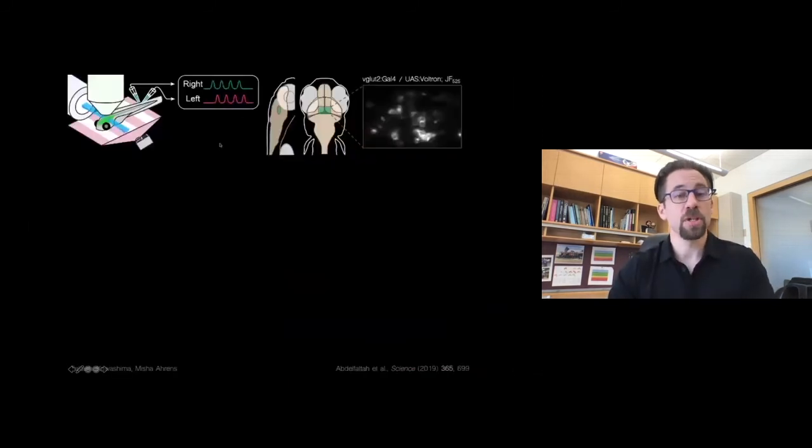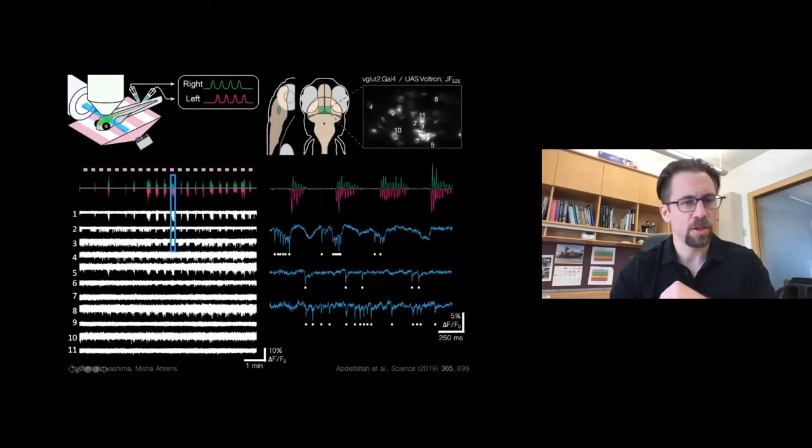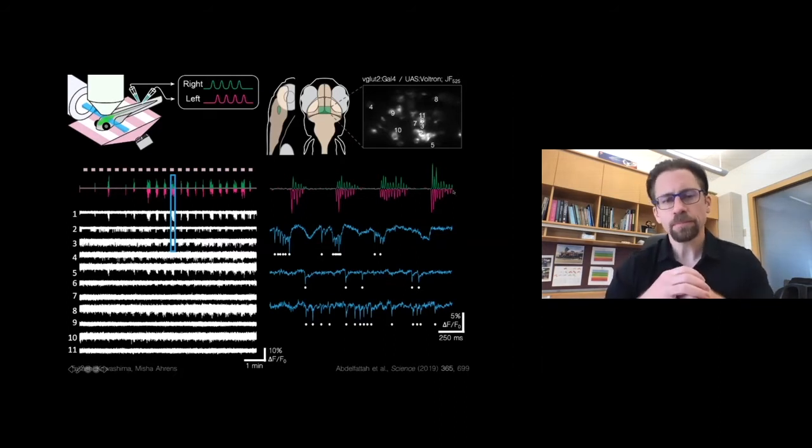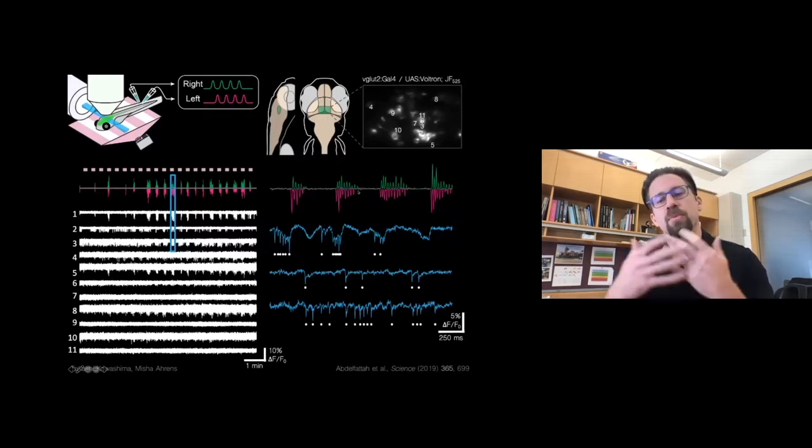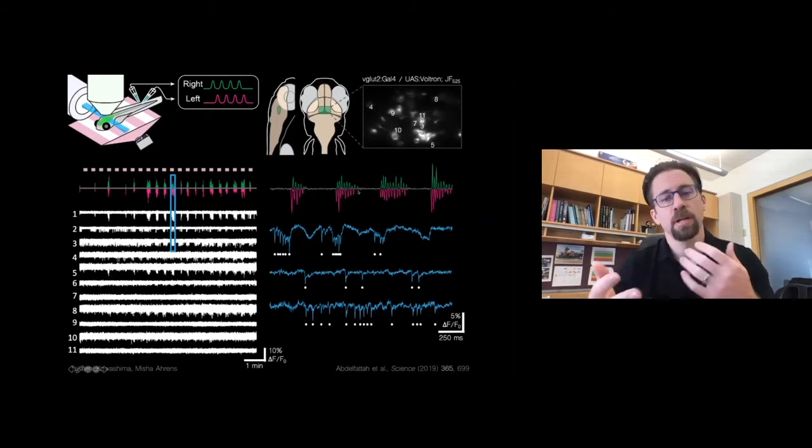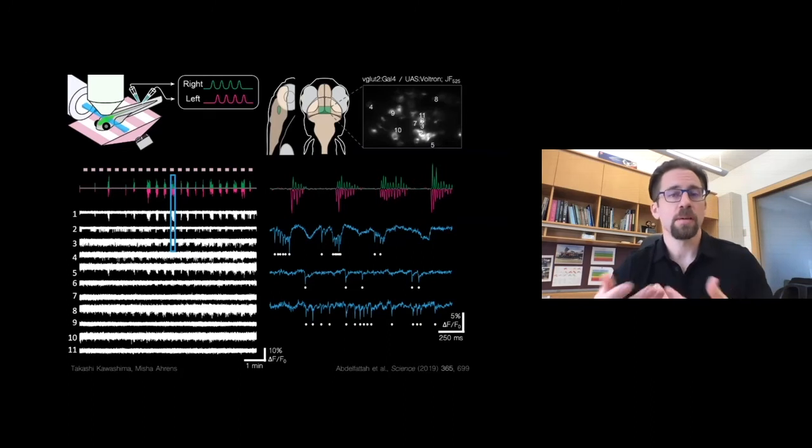In zebrafish, Misha Ahrens's lab here at Janelia imaged Voltron with a light sheet microscope during a fictive swimming behavior that's depicted here in the top left. They imaged signals from around ten excitatory neurons at a time from right in the middle of the fish's brain here. And here are the fluorescence traces from the 11 neurons in this field of view. And on the right I'm showing a zoom of the fluorescence traces for three of those neurons along with the behavior, the tail movements. So you can see that we can correlate these fast action potential signals as well as the sub-threshold signals with these very fast tail oscillations that make up the swimming behavior. And this wasn't possible to do with calcium indicators that they'd been using previously because of the much slower kinetics of the calcium. So Misha's lab has used these data to make a model for the involvement of this particular brain region in the swimming behavior.